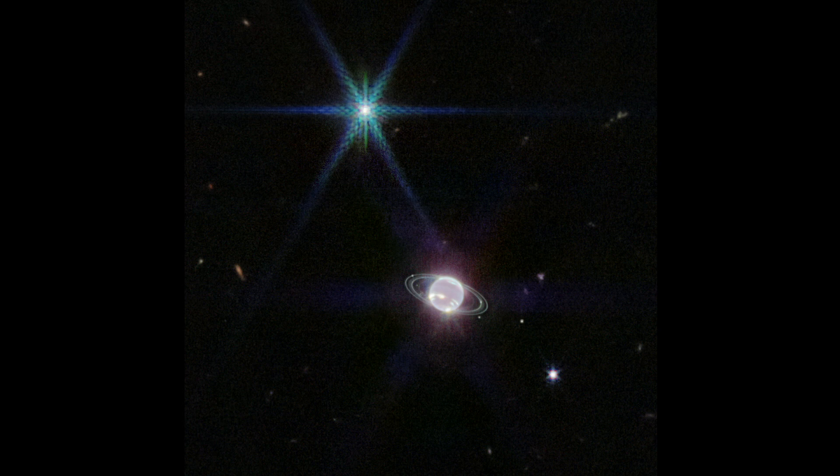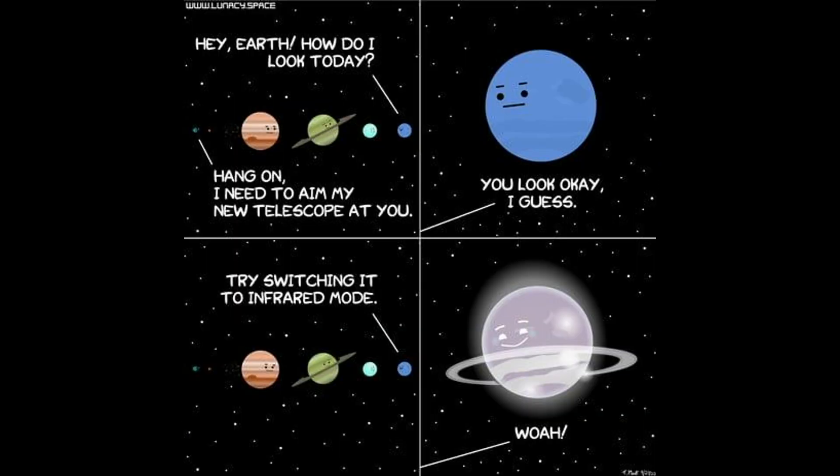They released this image of Neptune, which made me wonder — is this for Halloween as well since Neptune looks like a little ghost? What is really different about these infrared views versus visible light? I asked one of our wonderful producers, Sarah Vincent, to take this on and tell us a little bit about how the Webb is different and what we're seeing in some of these images.